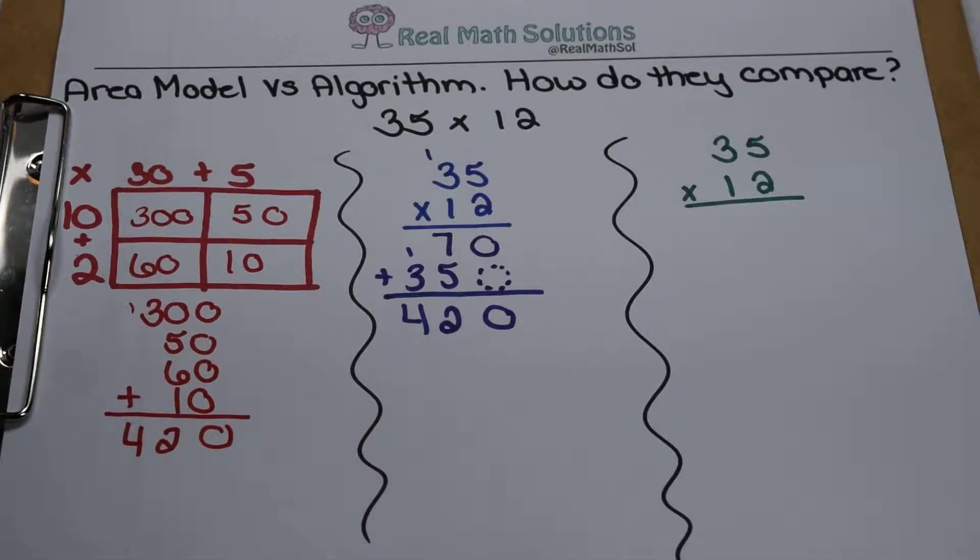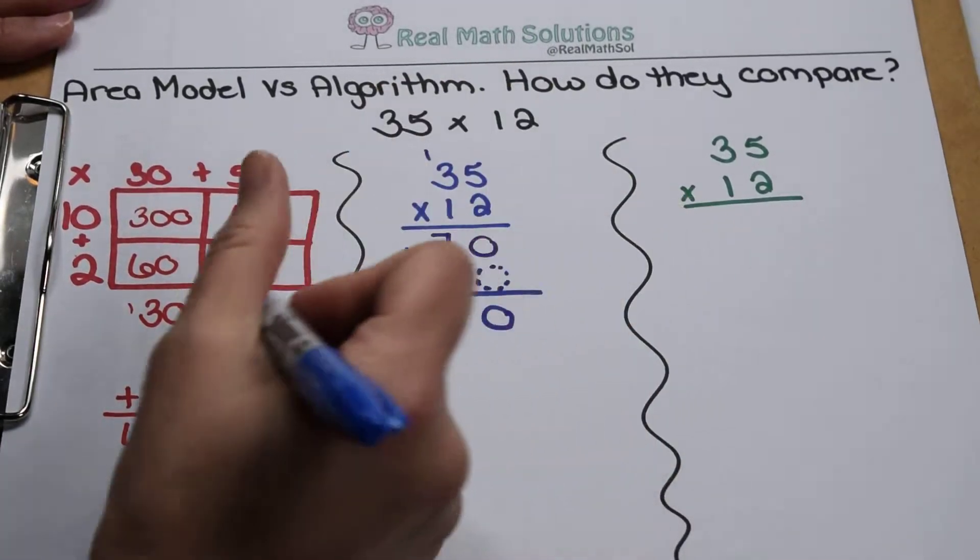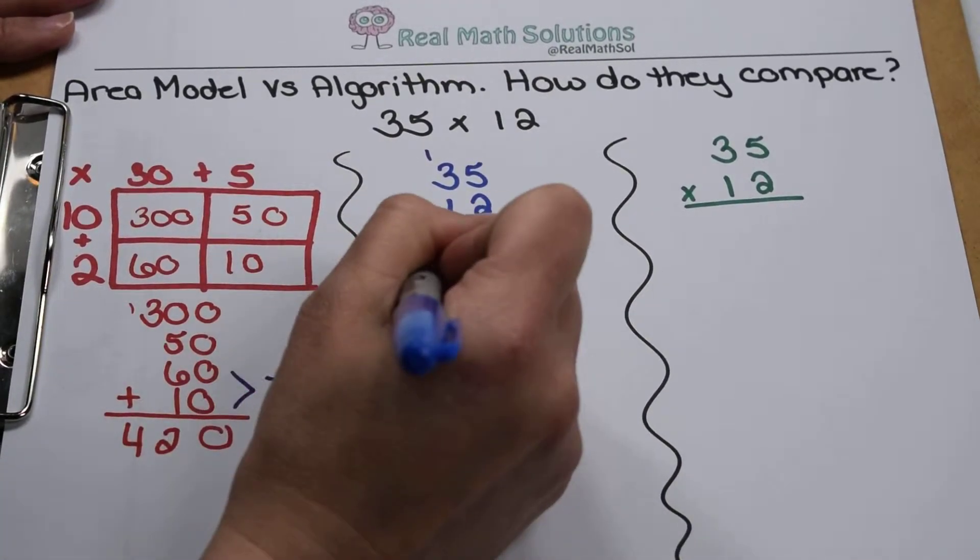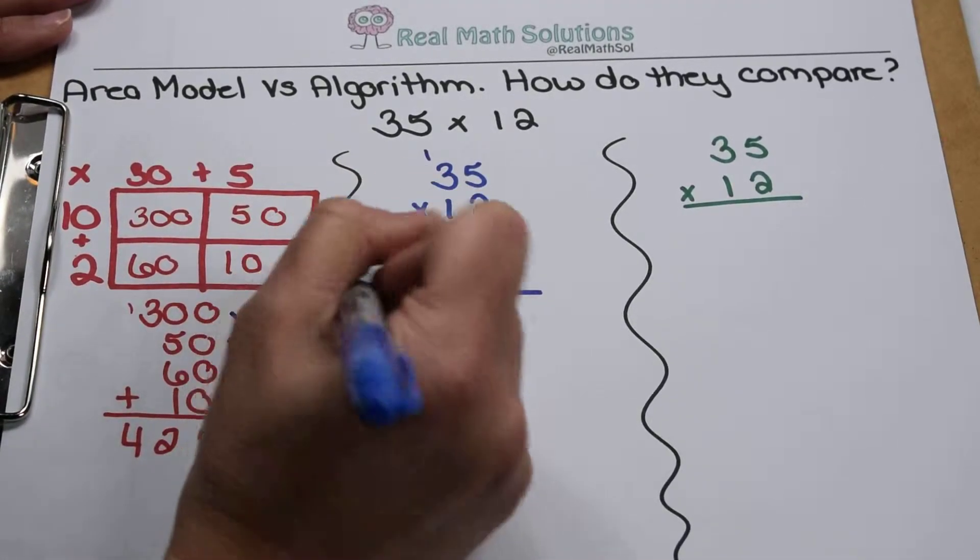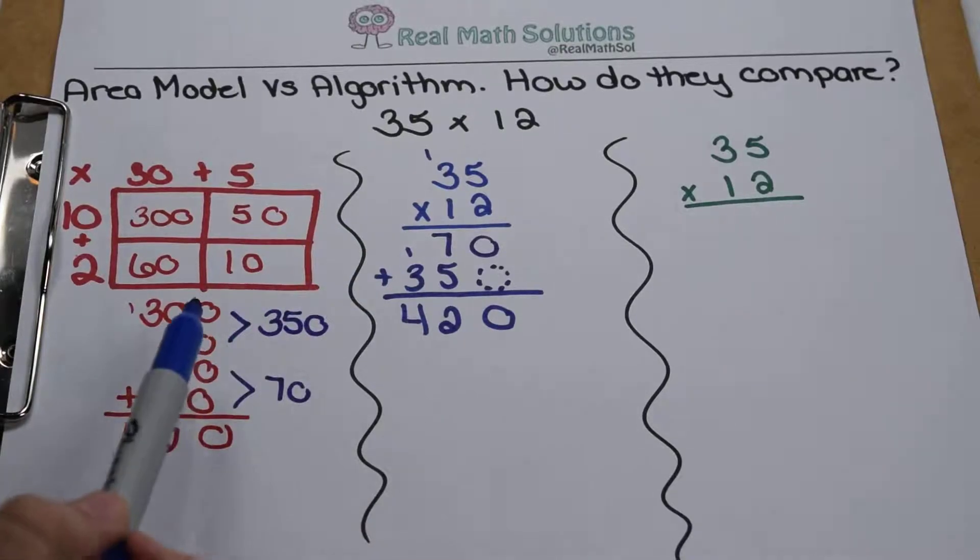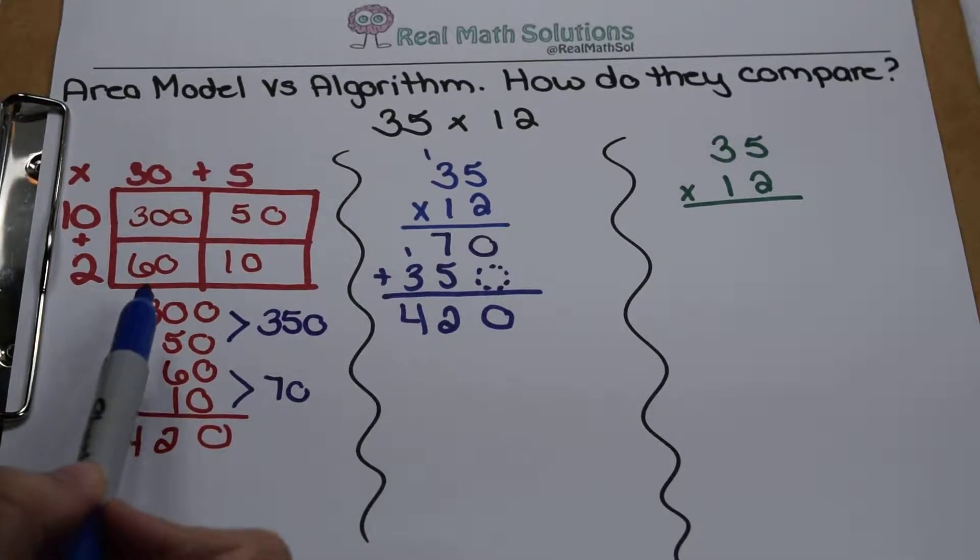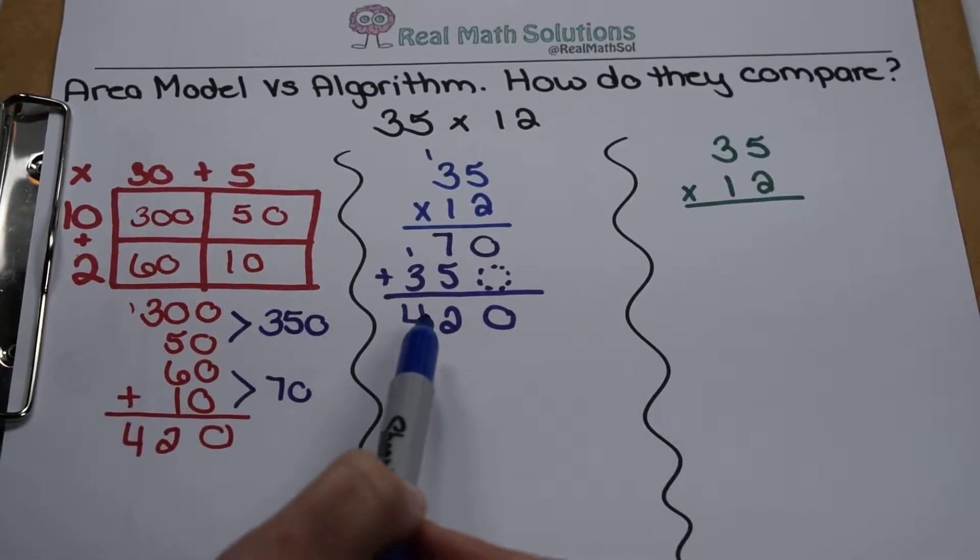Let's look at this for a second. 70 - well, 60 and 10, there's my 70. 350 - there's my 350. So really, I wound up adding the same numbers. Just here, they're in smaller pieces than they were over there.